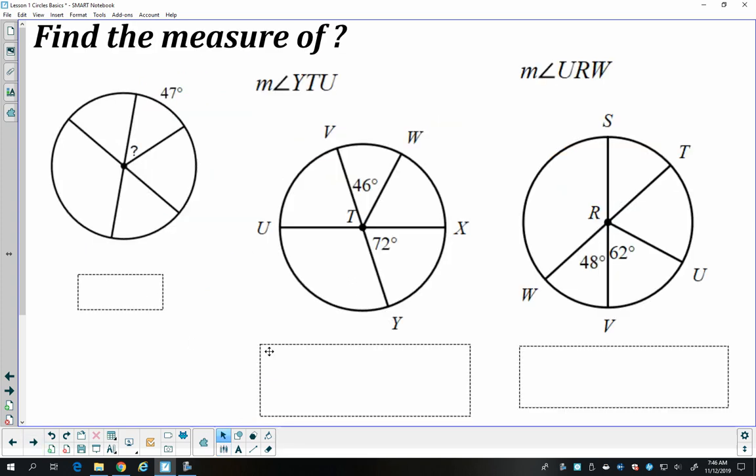So let's take a look at some examples. I want to find the measure of question mark, so this angle. That's located at the center of the circle. It's made by those two sides. And it intercepts this arc that's 47 degrees. And so therefore, that angle is also 47 degrees.